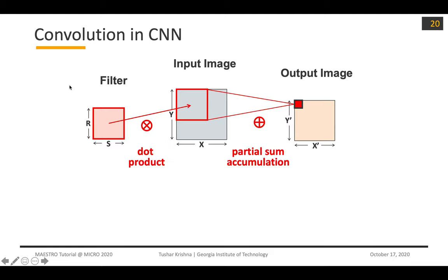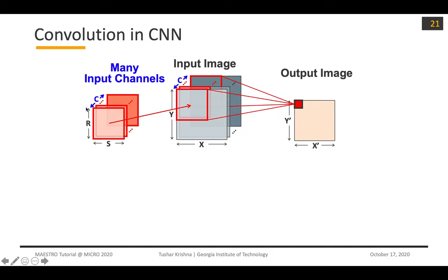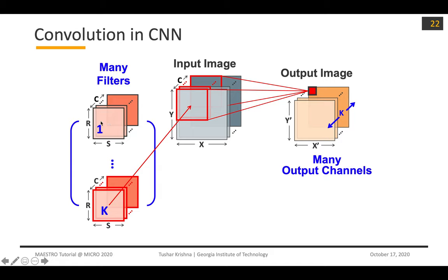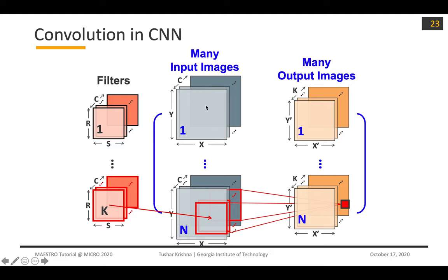In terms of a convolutional operation, it looks like this: you have a filter and an input image. You take this filter, apply it to the image, get one output, and slide this around to get the output image. Now in a CNN, you have many input channels. At the very first layer, you can view this as RGB for an image, so you might have three channels. Once you go deeper into the networks, these channels increase. You have a bunch of input channels and filter channels, and then a bunch of filters. When you apply many filters, the number of filters leads to many output channels. These output channels essentially become input channels for the next layer. If you have batching, you might have multiple images, which lead to multiple output images as well.